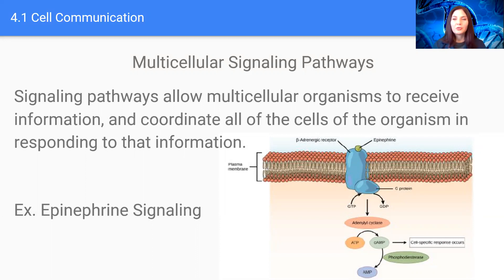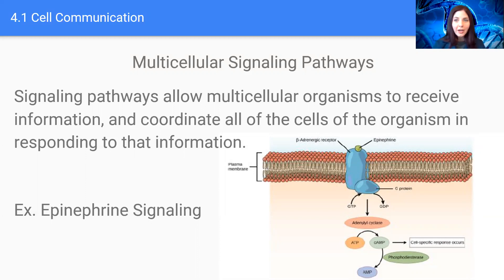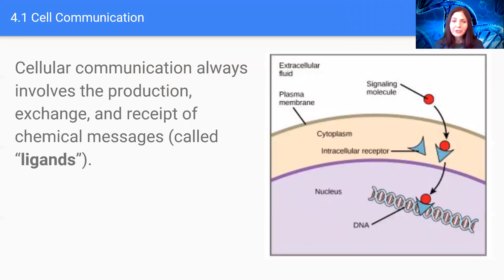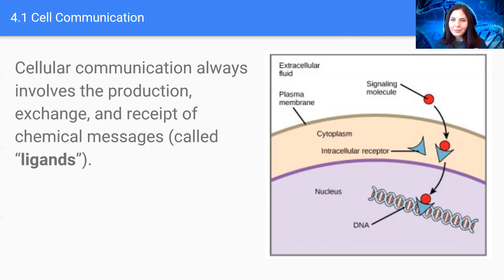That is what allows us to react to our environment, whether that is external like air and temperature, or internal such as if I've consumed glucose or fat and my body now has to signal for different enzymes to break those down or to synthesize and put those together. Cellular communication always involves the production, exchange, and receipt of chemical messages. Those chemical messengers are called ligands, and those signaling molecules can be exchanged between cells in a variety of ways.